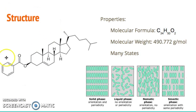Here is its structure. Its molecular formula is C34H50O2 and its molecular weight is 490.772 grams per mole. It also has many states, and that's one of the main characteristics of why it changes color, which we'll talk about a little bit later.